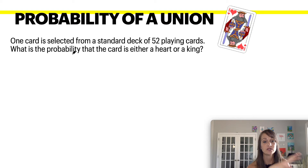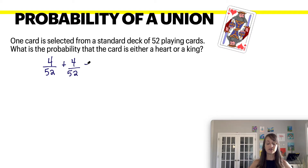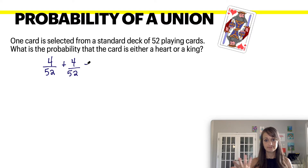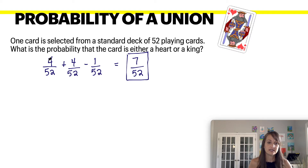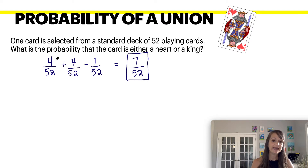Let's work through it: what's the probability that a card is either a heart or a king? There are 13 hearts in the deck and four kings. We need to check if any card is both a heart and a king — yes, the king of hearts. So we subtract that one card using the formula: 13 plus 4 is 17, minus 1 is 16 out of 52. The king of hearts is being counted in both groups, which is why we must subtract it.